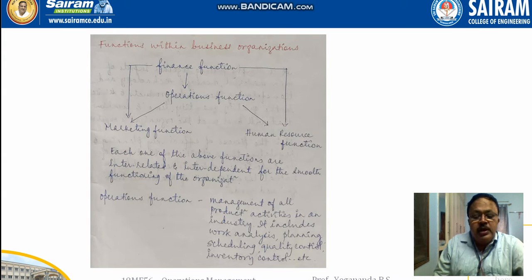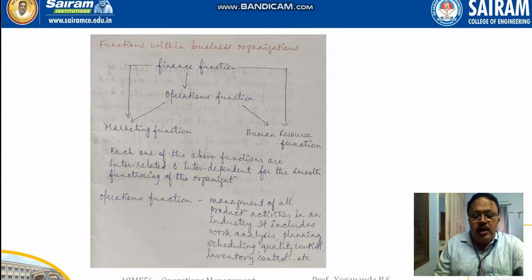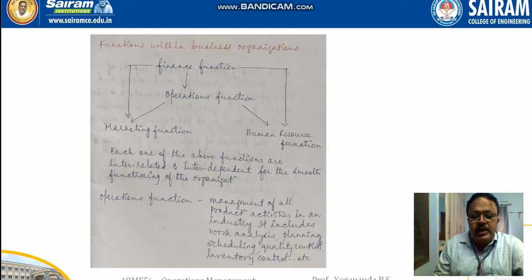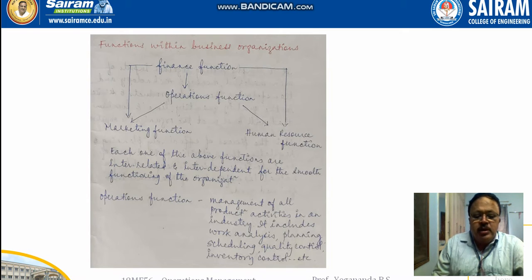The operation function is the management of all production activities within the industry. It includes planning, scheduling, quality control, inventory control, etc. Inventory is the stock of goods — whether raw materials or finished goods. It is the responsibility of the organization to take care of raw materials received until they are converted to the final product.